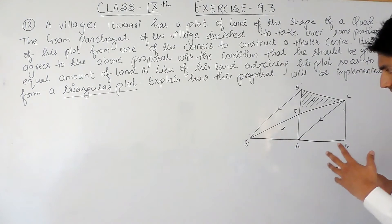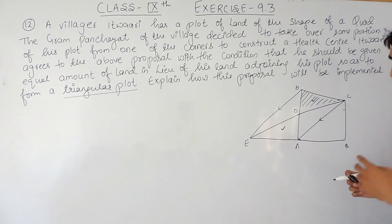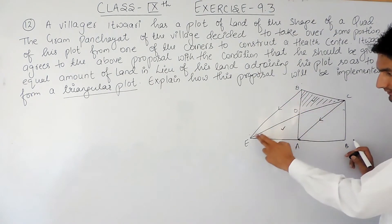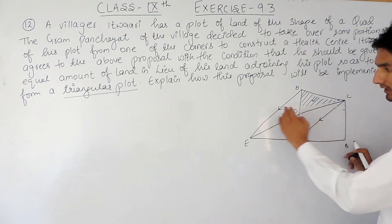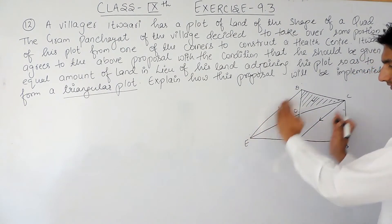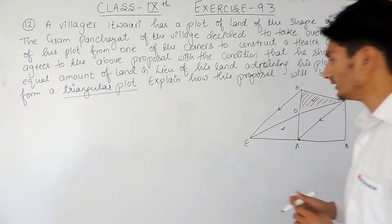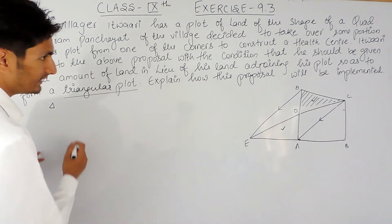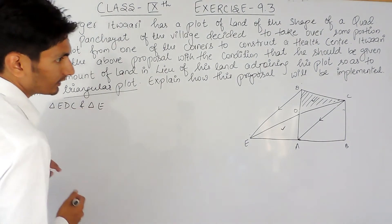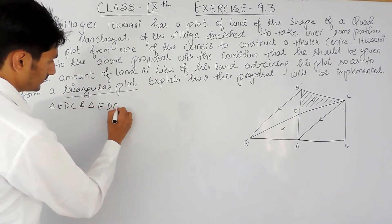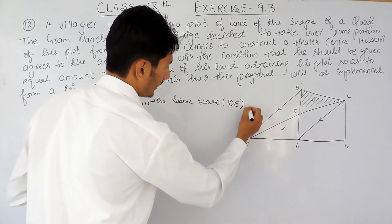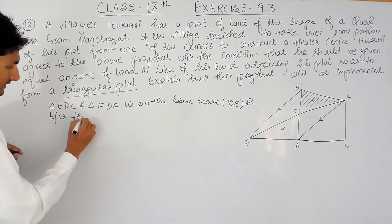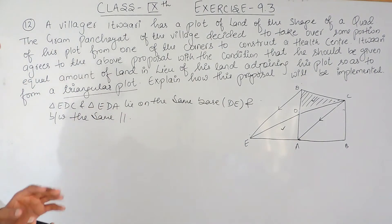To prove this, we use a basic theorem which says: if two triangles are on the same base and between the same parallels, then their areas must be equal. Here, triangles EAD and ECD both lie on the same base ED and are between the same parallels ED and AC, so their areas must be equal. So triangle EDC and triangle EDA lie on the same base DE and between the same parallels ED and AC.